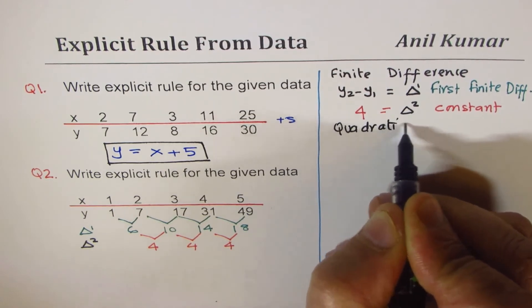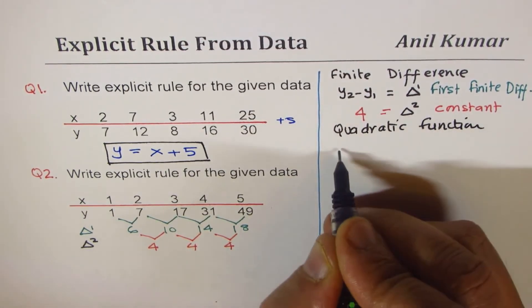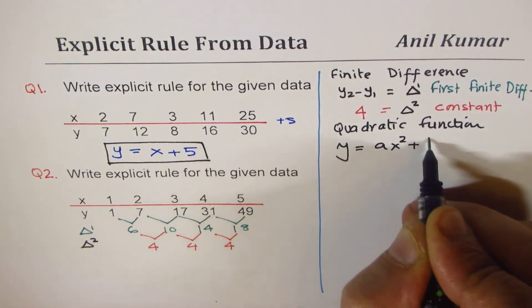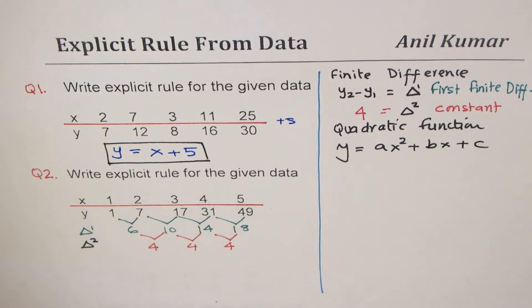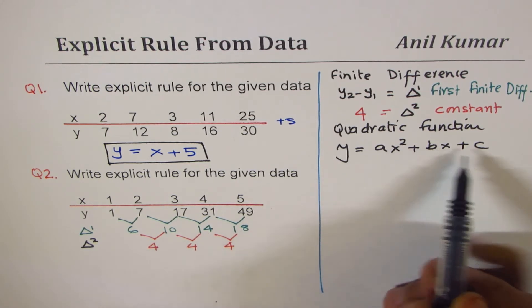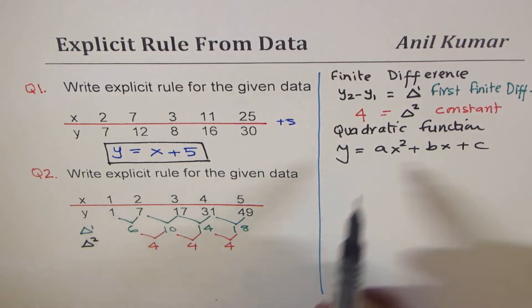That means it is a quadratic function where explicitly we can write y as ax square plus bx plus c. So that becomes the equation. Now we need to find the value of a, b, and c. There are three unknowns; you can use three values from here, solve three equations, and get your answer.